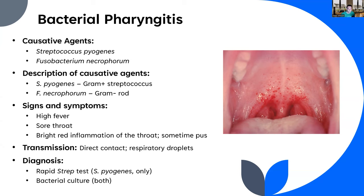Signs and symptoms of bacterial pharyngitis include high fever — around 102, 103, 104 — sore throat, and bright red inflammation at the back of the throat. You might even see pus forming depending on how advanced the infection is. This disease is fairly readily transmitted either through direct contact with fluids or through respiratory droplets, so if you know somebody who has it, keep your distance.